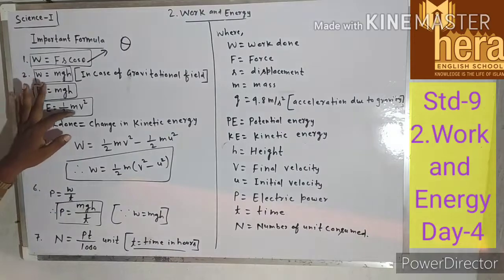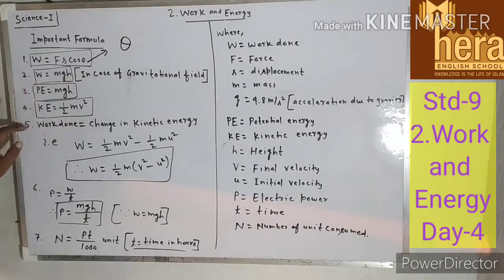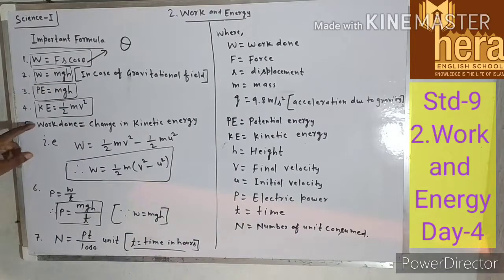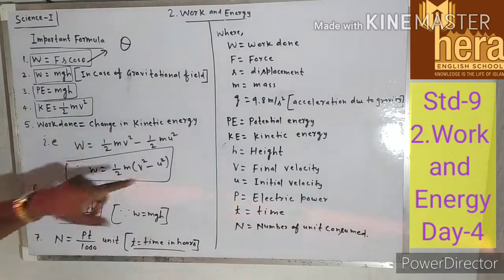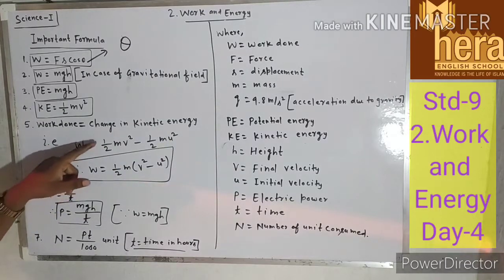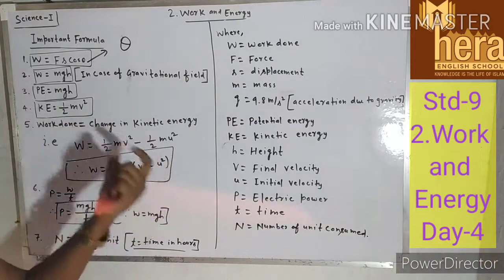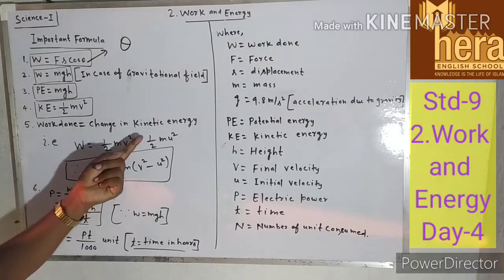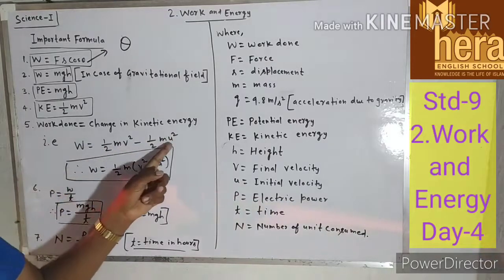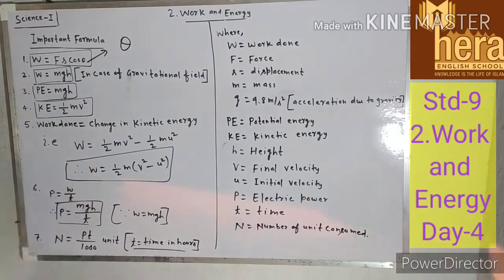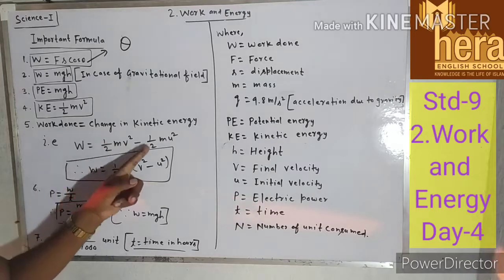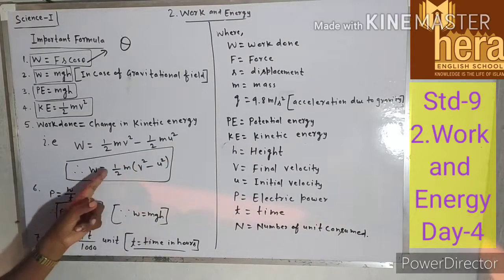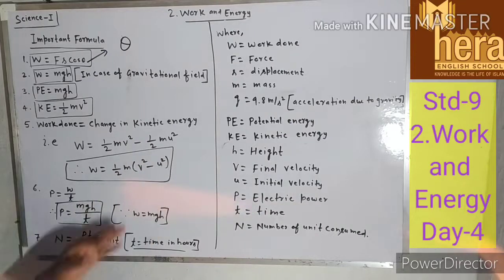Kinetic energy equals ½mv². Work done equals change in kinetic energy, that is final KE minus initial KE: W = ½mv² − ½mu². Taking ½M common, W = ½M(v² − u²). Here V is the final velocity and U is the initial velocity. This formula is important and we will use it in the numericals.